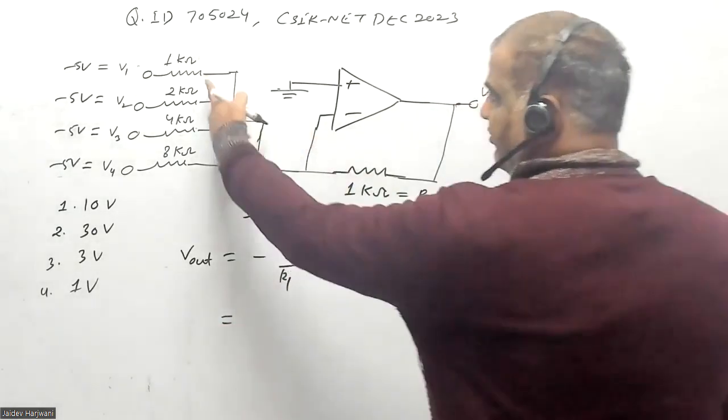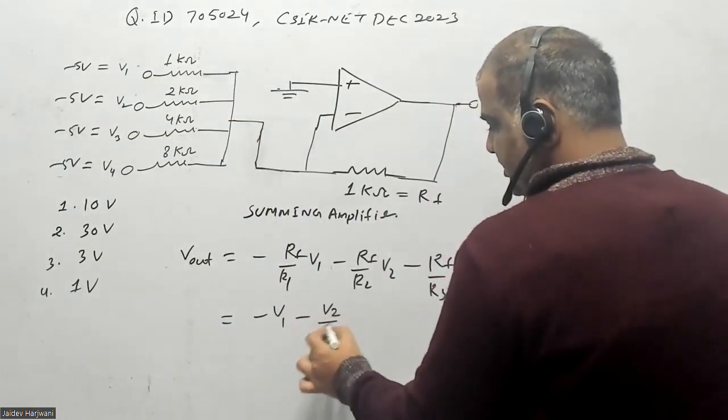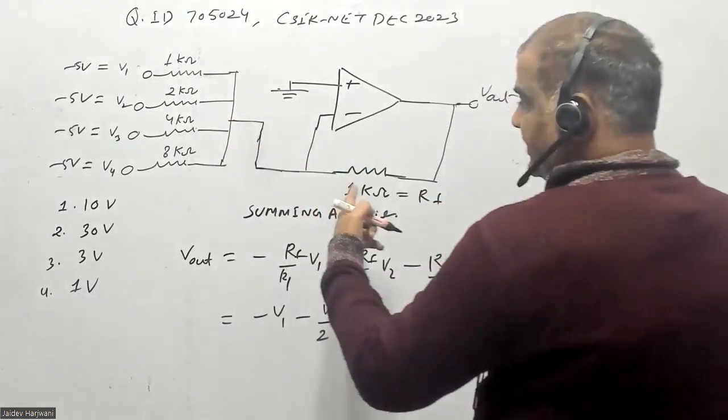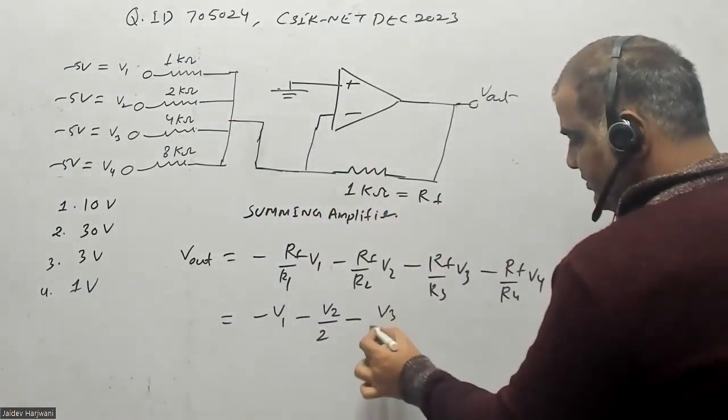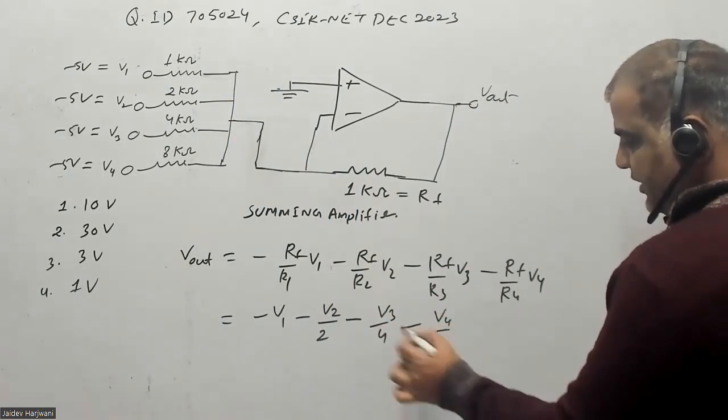Now R_F and R1 values I am putting - this is 1 kilohm, 1 kilohm, so this will give you minus V1, minus V2 by 2, and this is 4 by 1 so V3 by 4, and last is V4 by 8.